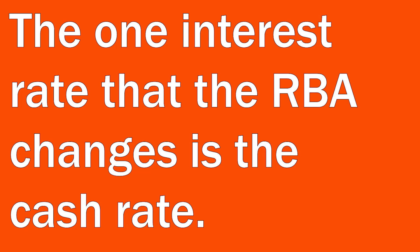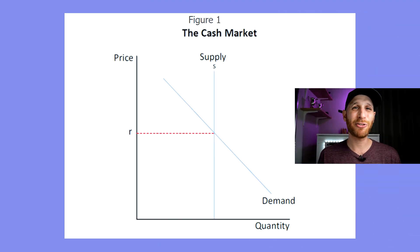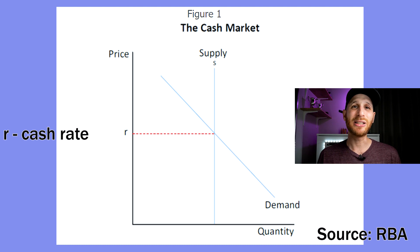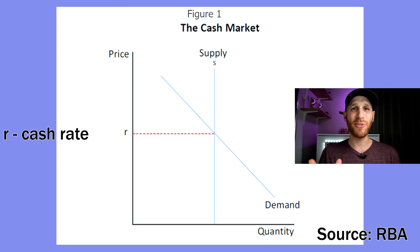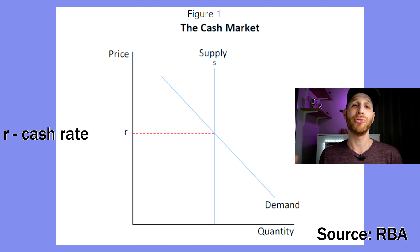What it tries to do is use this one interest rate to affect all of the interest rates in the Australian economy. The one interest rate that the RBA changes is the cash rate — the rate of interest that occurs in the Australian cash market, where all the banks are lending and borrowing money from each other to settle debts. The RBA changes the cash rate, which then changes the costs of business for banks, which leads them to increase or decrease interest rates depending on how it affects their business.